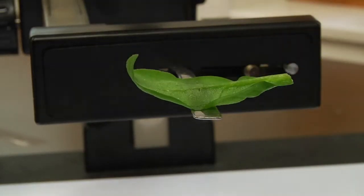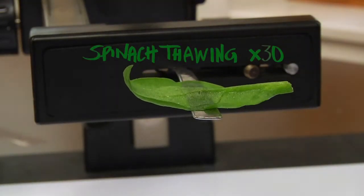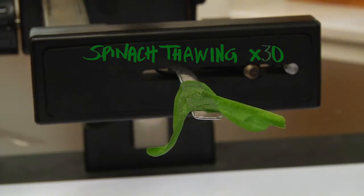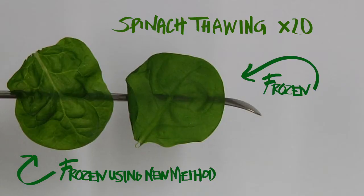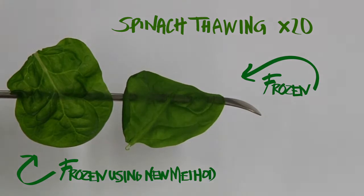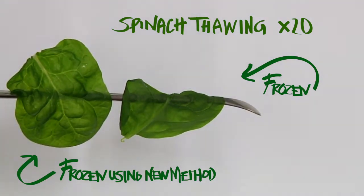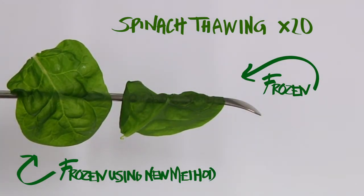Normally when you freeze and unfreeze these kind of vegetables, they completely collapse. Now we keep them intact upon thawing, so it means that you will have them fresh even after freezing and thawing. So that's the problem that we have solved.